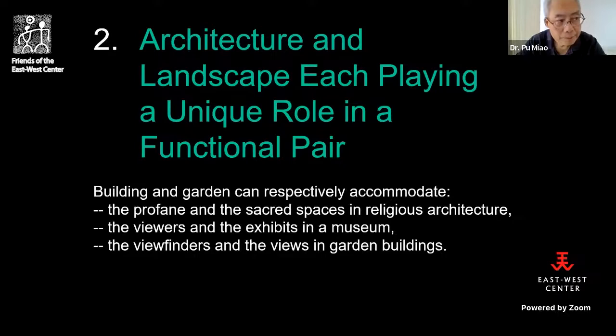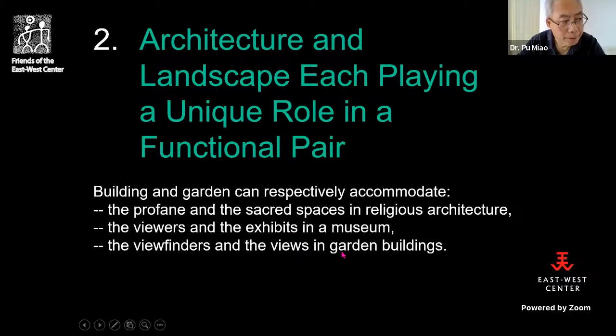But there are buildings where the functional pair has a different rule. For example, in religious architecture you have a profane space and a sacred space; in a museum you have a space for viewers and a space for the exhibits; and in a garden building you have viewfinders and the views themselves. This mode lets architecture and landscape each play a different role in the functional pair rather than being exchangeable.